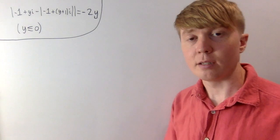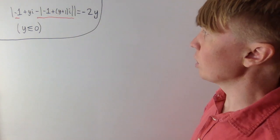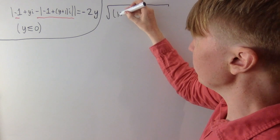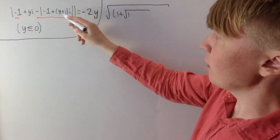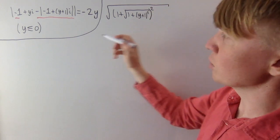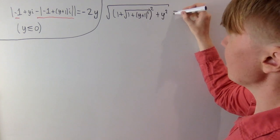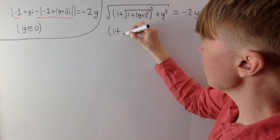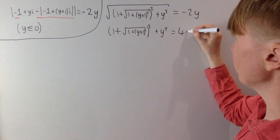Now we expand the left-hand side. The real part of z minus the modulus term is minus 1 minus the modulus, which we write as 1 plus the square root of 1 plus (y+1) squared. Squaring this real part, then adding the imaginary part squared, y squared, gives us the full expression equal to minus 2y. Squaring both sides: 1 plus the square root of 1 plus (y+1) squared, all squared, plus y squared equals 4y squared.